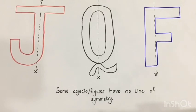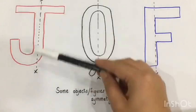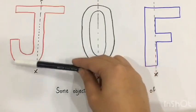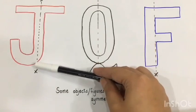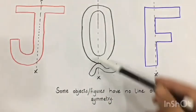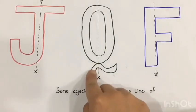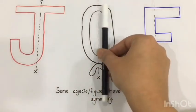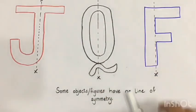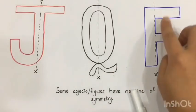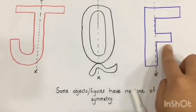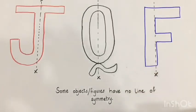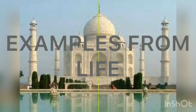Sometimes some objects or figures have no line of symmetry at all. Look at the letter J — I have made a line in the center, but you can see there is a curve on the left side but no curve on the right side, so these parts are not the mirror image and line of symmetry is not possible. Letter Q — on this part there is a small curve whereas on the right side there is a longer curve, so Q does not have a line of symmetry. Similarly, letter F — this part has two horizontal lines whereas this part has only a vertical line, so it also does not have a line of symmetry.